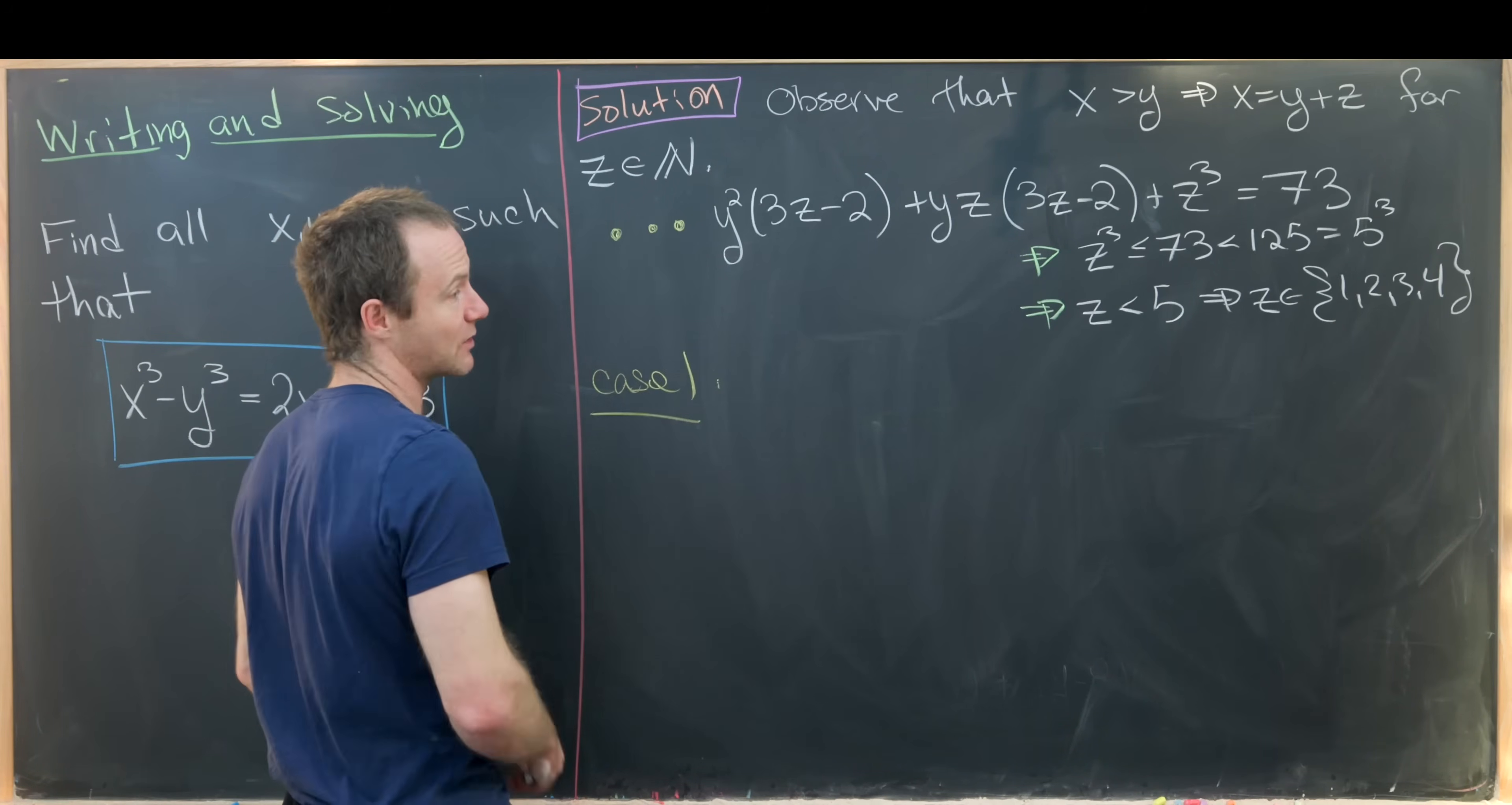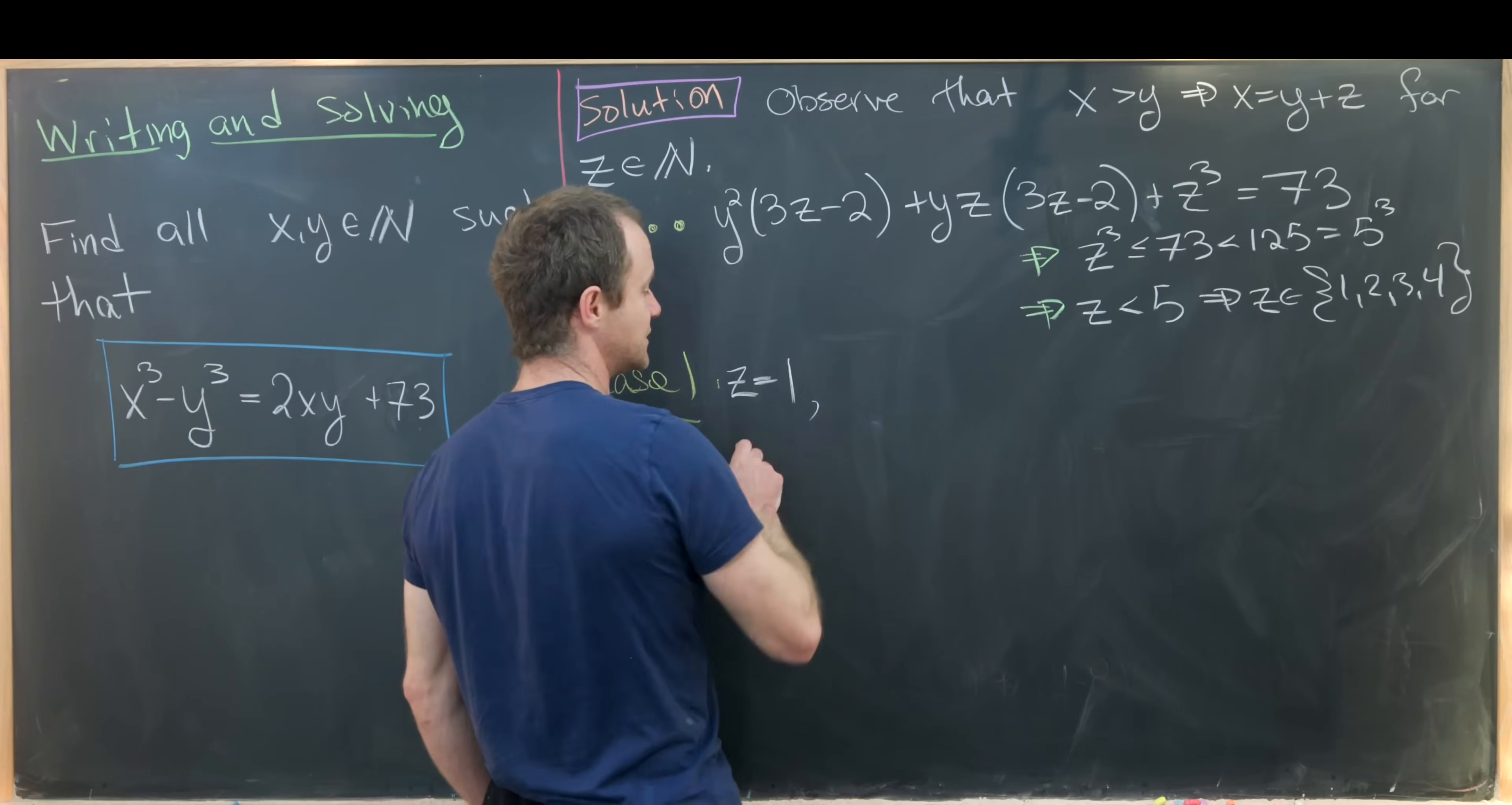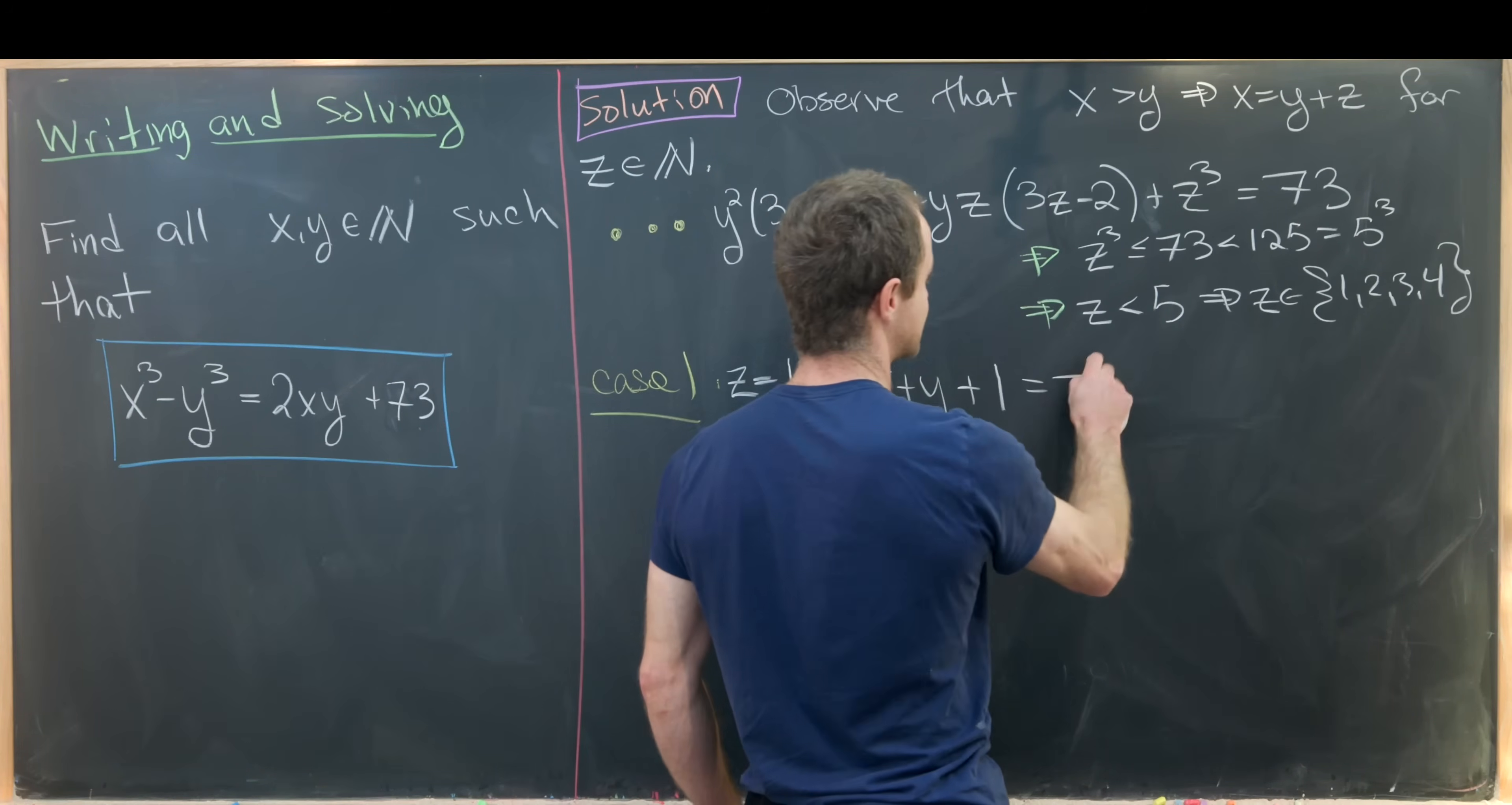So case number 1 would be the case when z is equal to 1. But that reduces to the equation that we solved on the last board, so that's y² + y + 1 = 73.